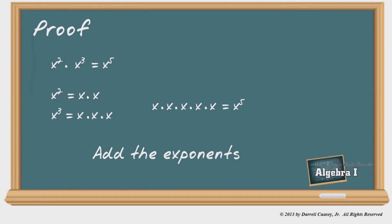Let's check out the proof. X squared times x cubed is x to the fifth power. So we'll expand them. And after expanding both of them, we'll bring them together and note that it's x to the fifth power. Just add the exponents.